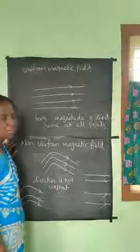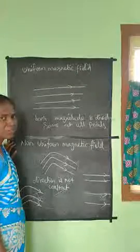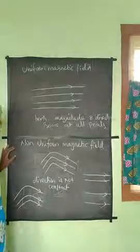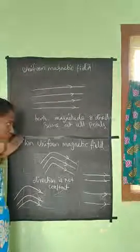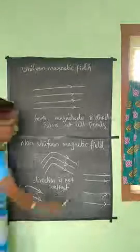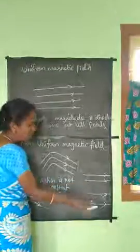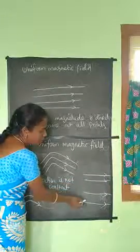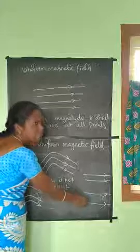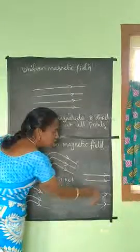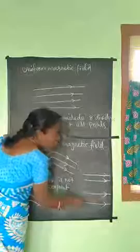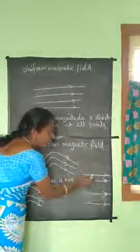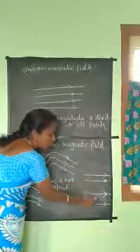Now comparing uniform and non-uniform magnetic fields. For a bar magnet, example one: in a uniform magnetic field, the magnitude is the same at all points. In a non-uniform magnetic field, the magnitude at different points is different.